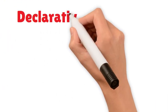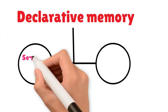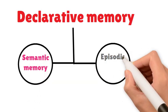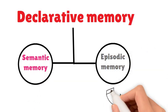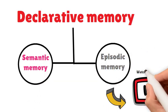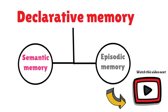Semantic memory is one of two types of declarative memory. The other type is called episodic memory. To learn about episodic memory, watch this video next.